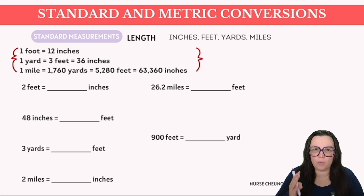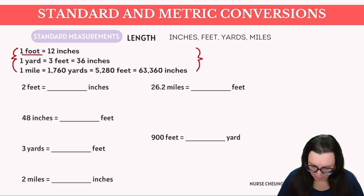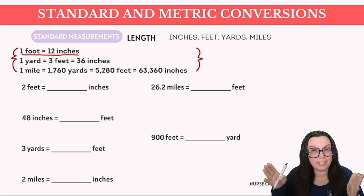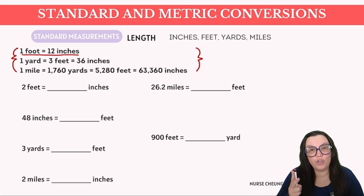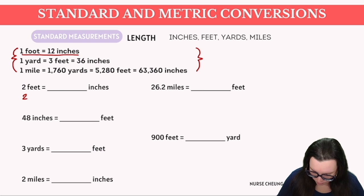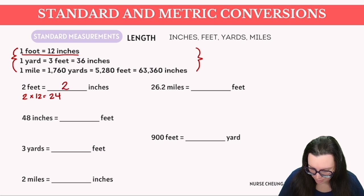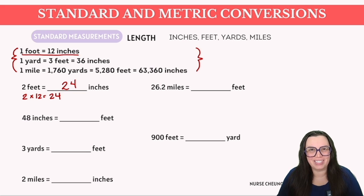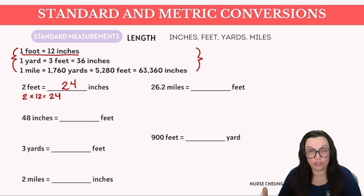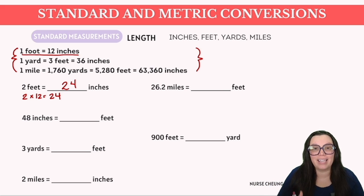For the first problem, one foot equals 12 inches — like a ruler. For two feet, we multiply: two times 12 inches gives us 24 inches. This is a crucial concept: whenever we're converting from a larger unit like feet to a smaller unit like inches, the operation we're going to use is multiplication.